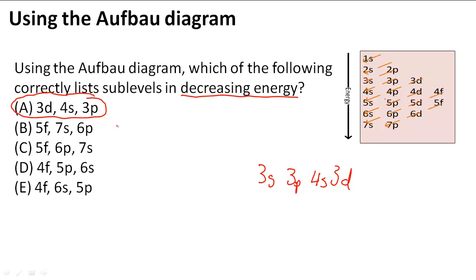So 5f, then 7s. 5f comes here, and then 7s, and then 6p. So that is correct. So don't be fooled by the numbers. Look at the energy diagram to make sure that you understand how the order goes.